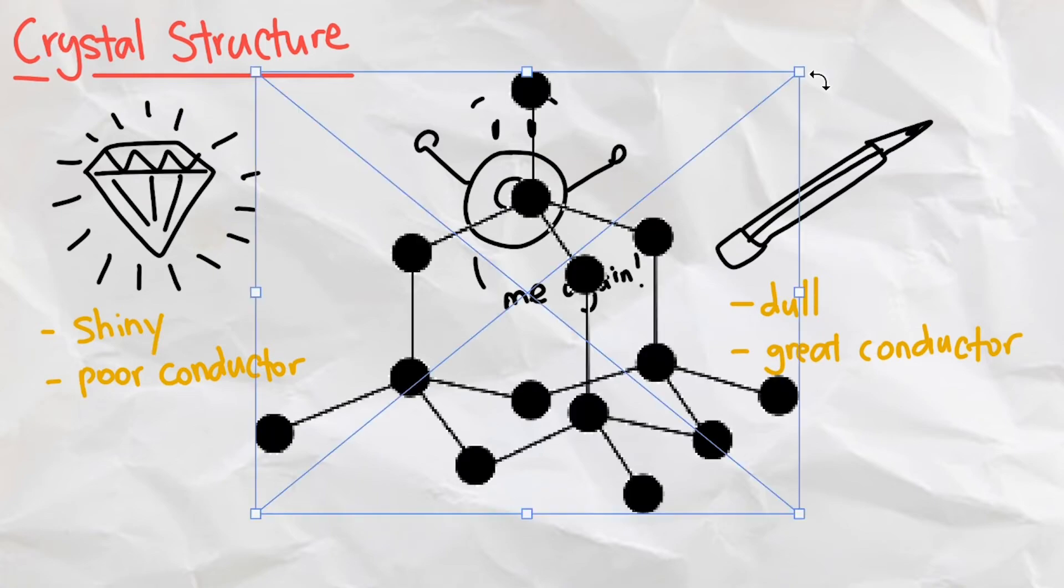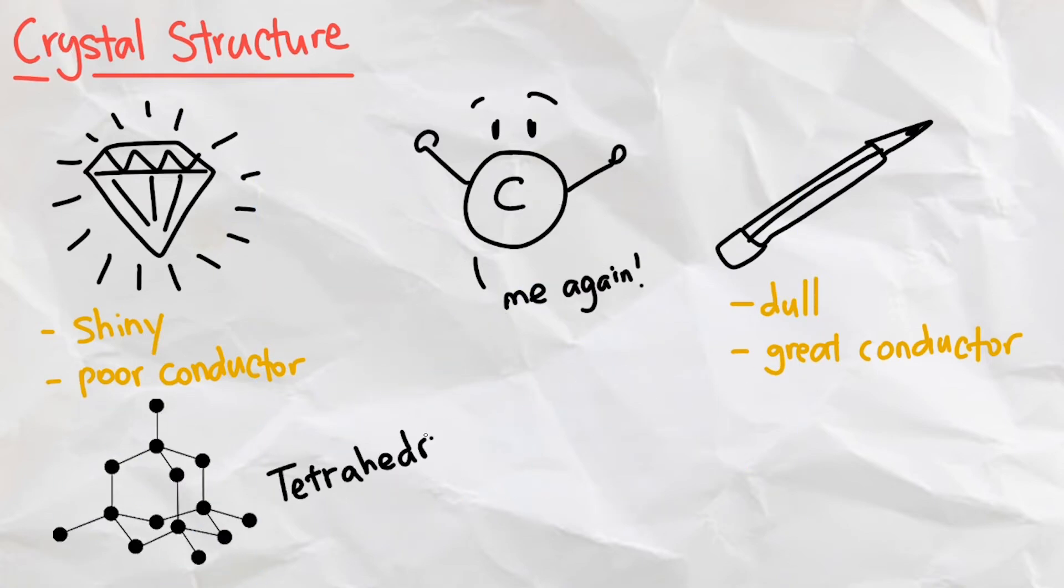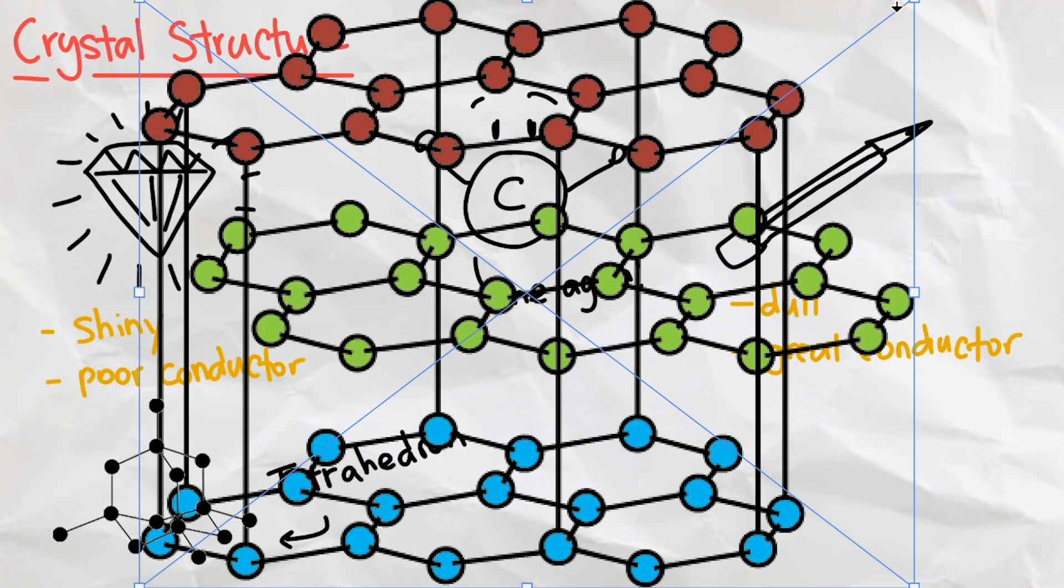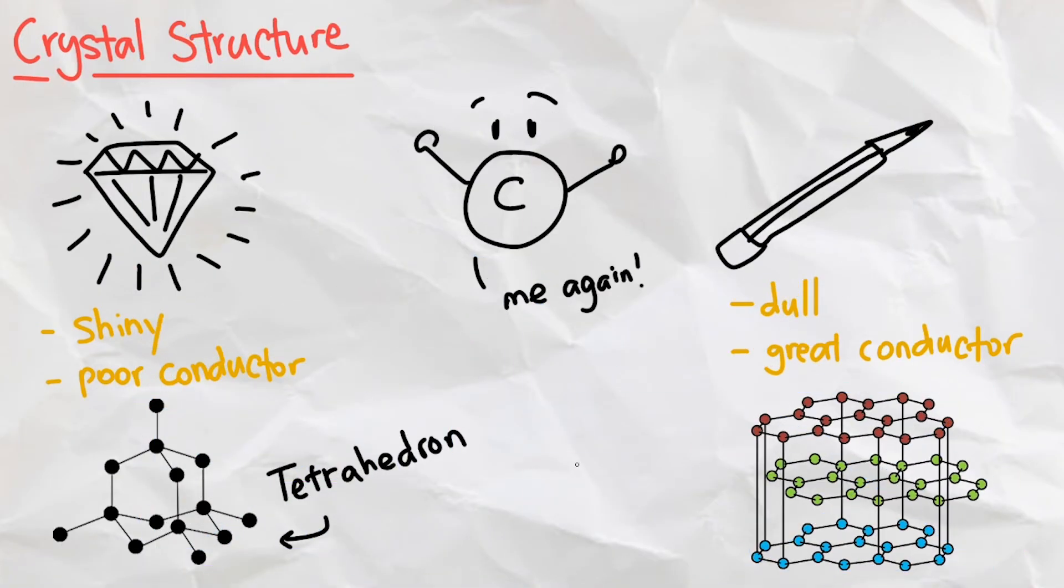In a diamond, carbon is arranged in a tetrahedron shape, while in graphite, carbon is arranged in sheets. This small difference makes both of those crystals very different from each other.